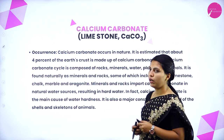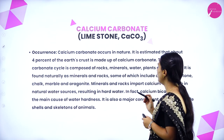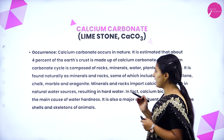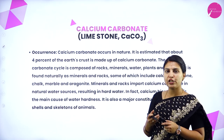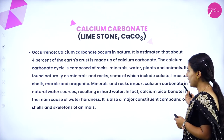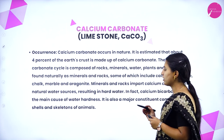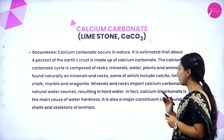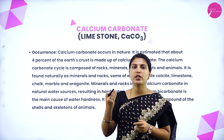Next, calcium carbonate — limestone. Occurrence: calcium carbonate occurs in nature, and it is estimated that about 4% of the earth's crust is made of calcium carbonate. The calcium carbonate cycle is composed of rocks, minerals, water, plants and animals — both organic and inorganic materials. It is found naturally as minerals and rocks, including calcite, limestone, chalk, marble and aragonite.